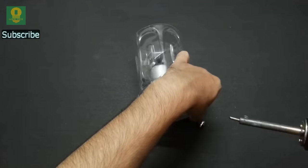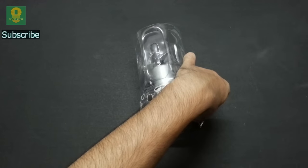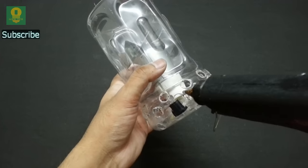Connect a DC adapter jack to the motor wires. Attach it to the bottle using hot glue.